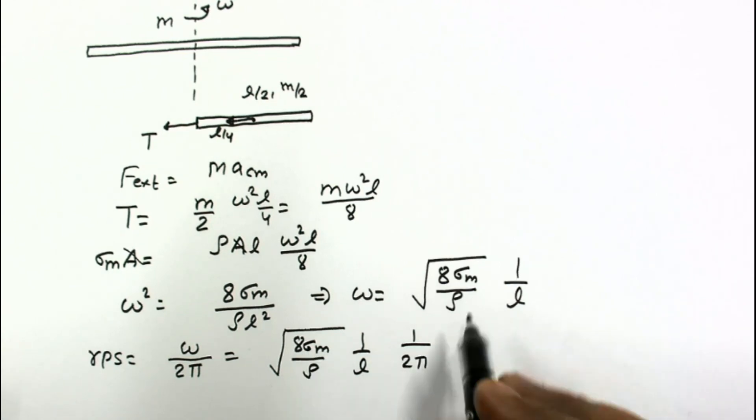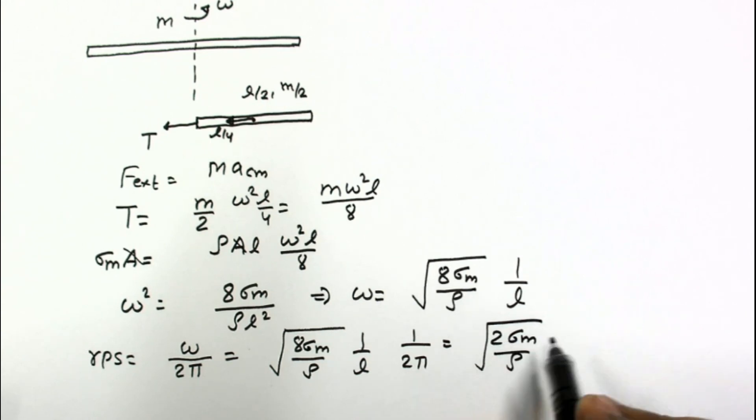This 2 will be 4, and finally this answer can be written as (1/π)√(2σ_m/(ρl)). So this is the final answer to this problem.